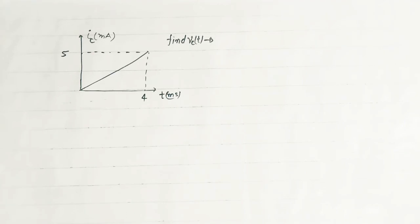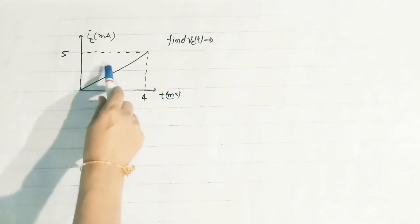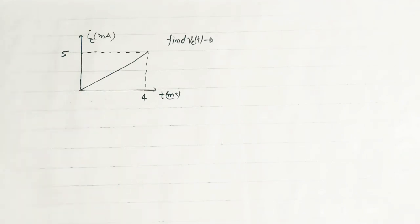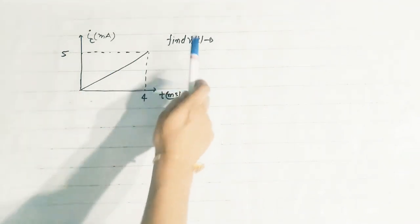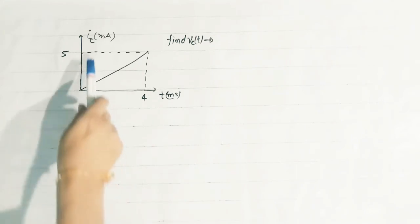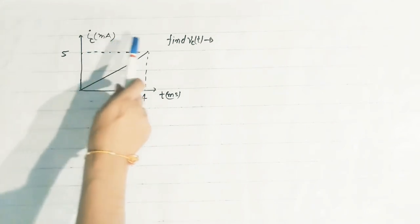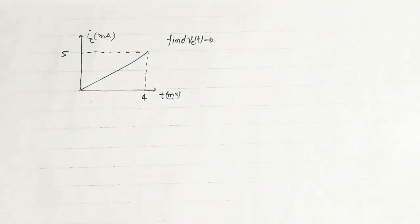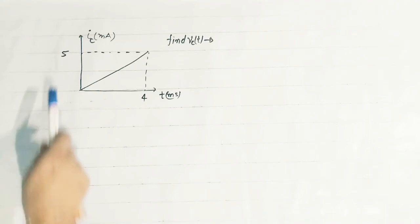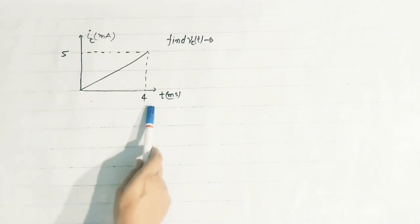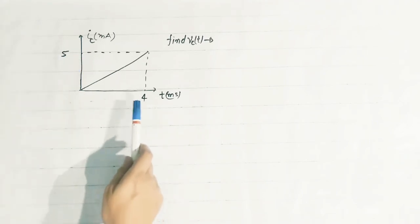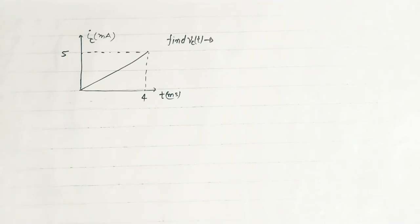In this question, the current through a capacitor is given as a ramp function, and we have to find the voltage waveform across the capacitor. The applied current waveform shows 5 milliamperes on the current axis and 4 milliseconds on the time axis. Let's see how we can easily solve this.